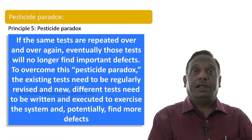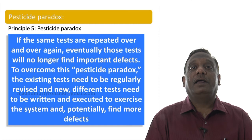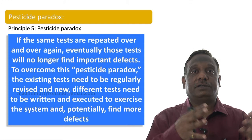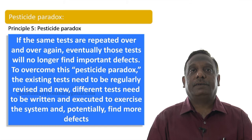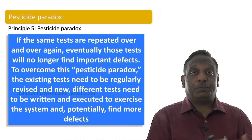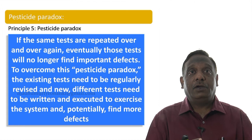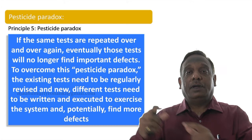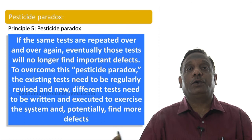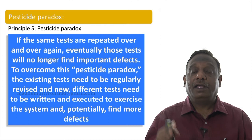If test suites are not modified or upgraded periodically, like a pesticide losing its effect to kill bugs, your test suites can lose effectiveness to find bugs. To apply this in day-to-day testing, think like a farmer: keep monitoring changes in your software and correspondingly upgrade your test suites. That means removing unnecessary tests, changing existing tests to match software changes, and adding new tests to cover new changes.